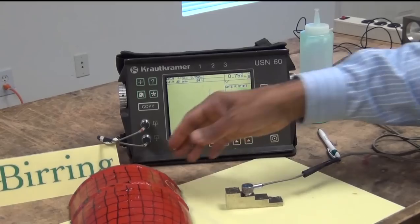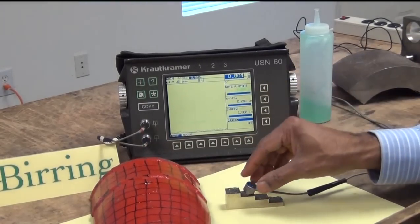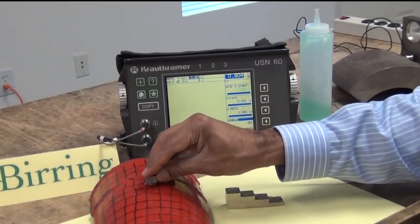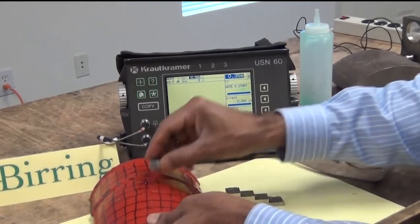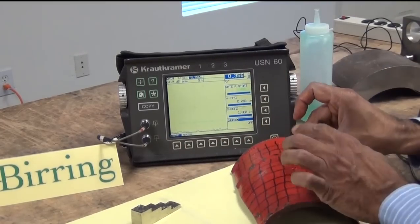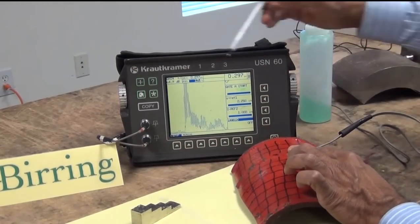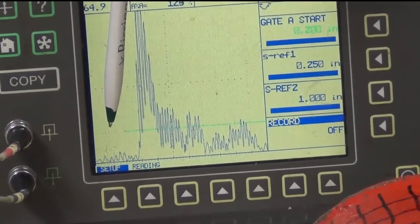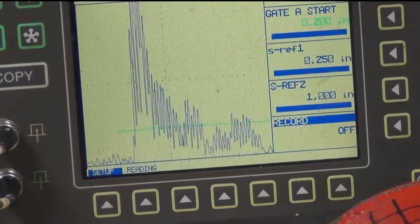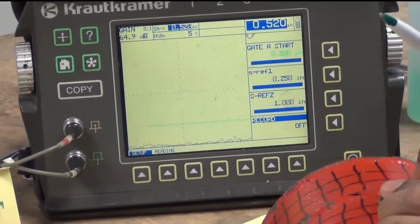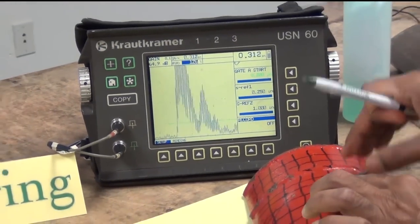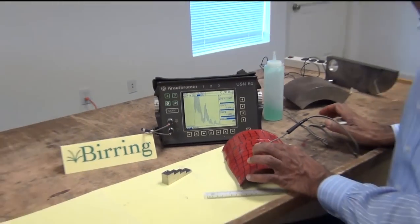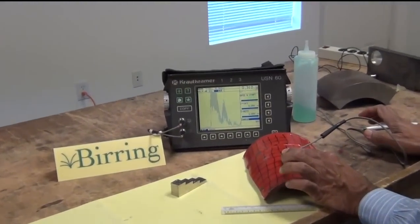Now we are ready to take the thickness measurement on this cutout. I will place the probe on the sample with some couplant on it. And as you can see the screen, it's reading. This is a 1 inch screen which means this is 0 and this is 1 inch. So it's about 0.1, 0.2, 0.3 and it's reading 297. If I go here it's reading 310. So that is a quick demonstration of the thickness measurement set up with a dual probe.